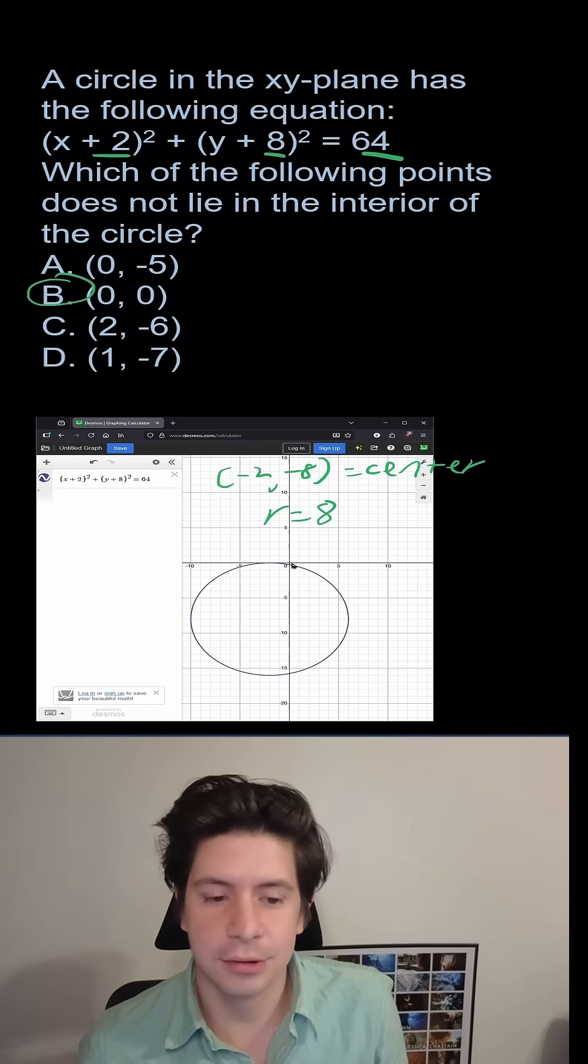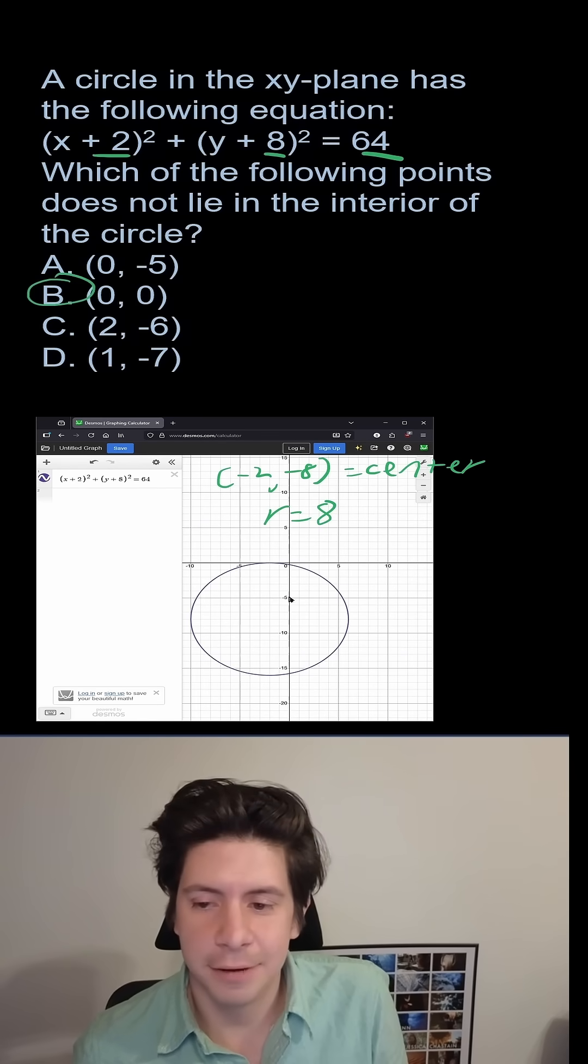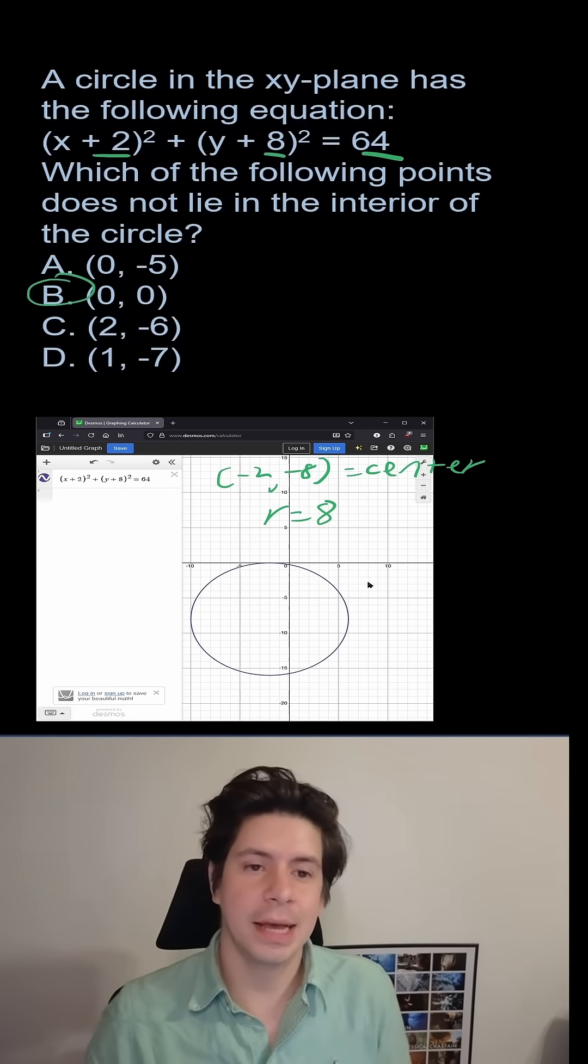So if we look, 0, 0 does not go in there. 0, negative 5 is clearly in there. 2, negative 6 is clearly in there, and 1, negative 7 is clearly in there. So it is B as in buzzing.